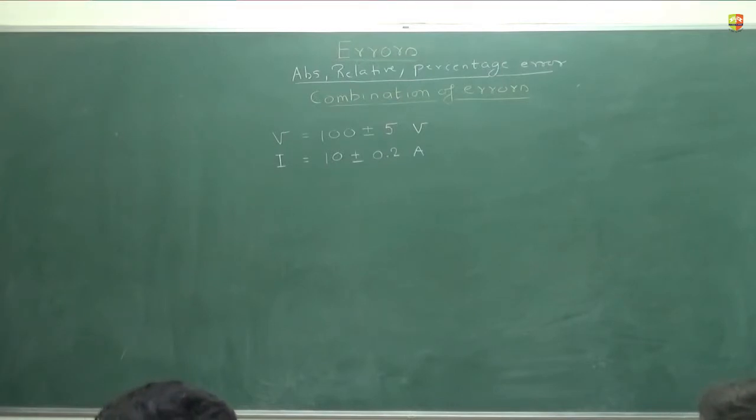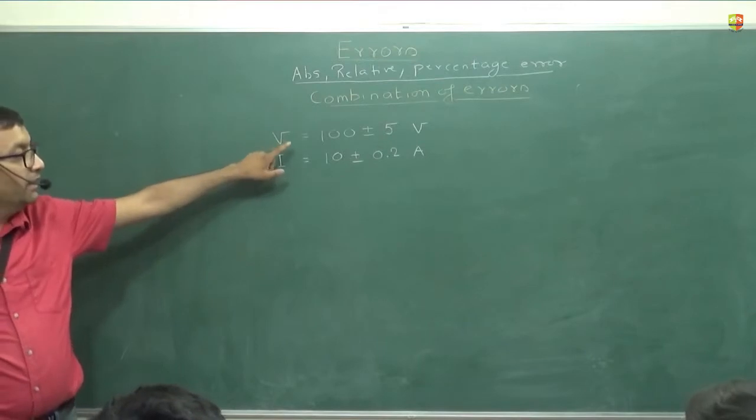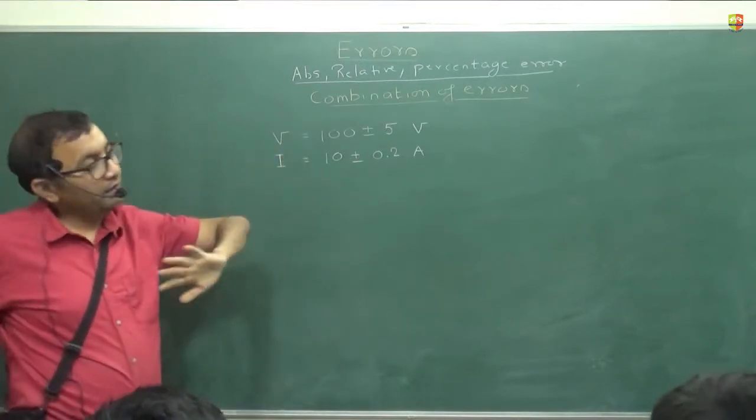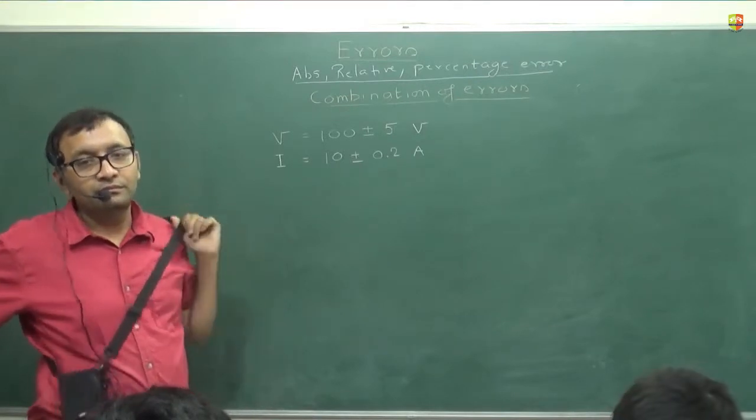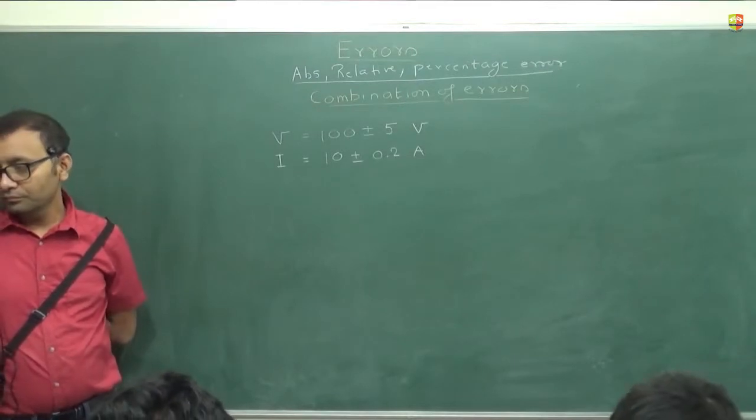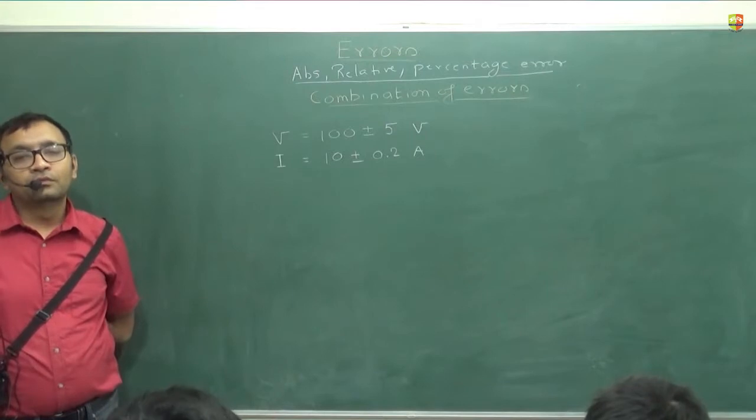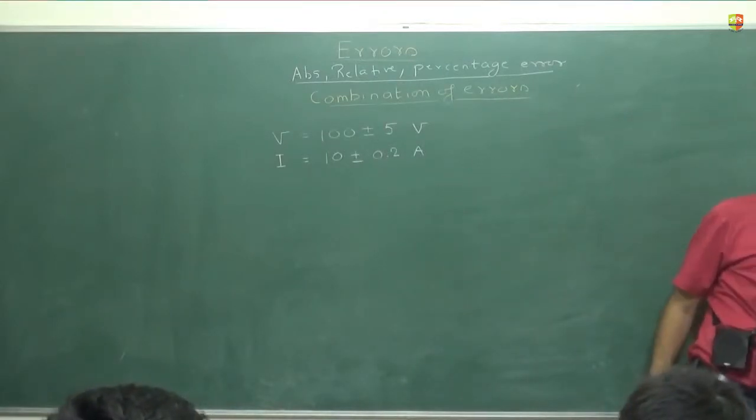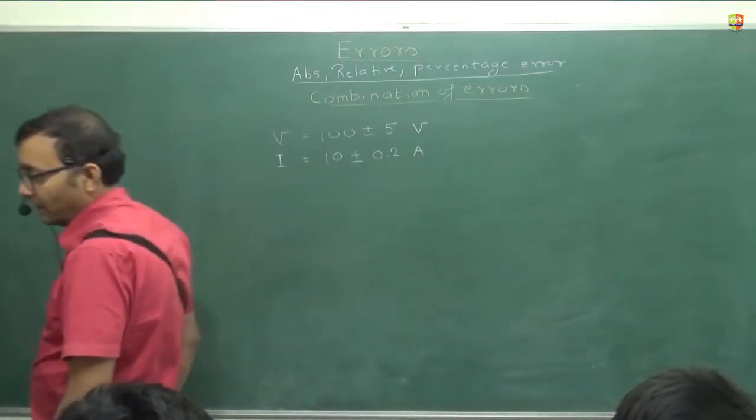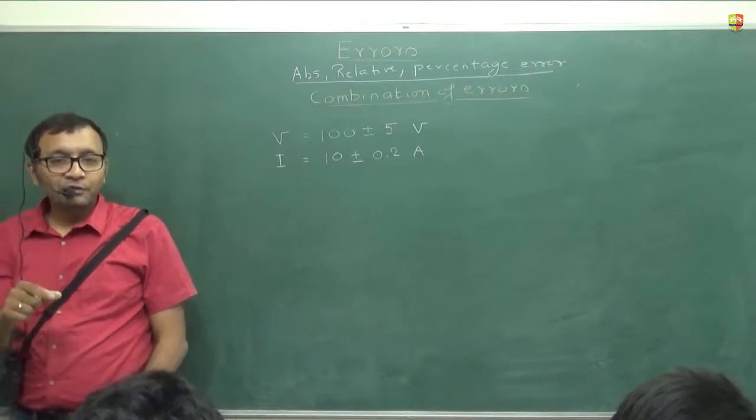Voltage is measured as 100 plus minus 5 volts and current is measured as 10 plus minus 0.2 ampere. What is the true value of resistance? 10 by 10 or 100 by 10? 10. So any error more than 10 is something wrong.